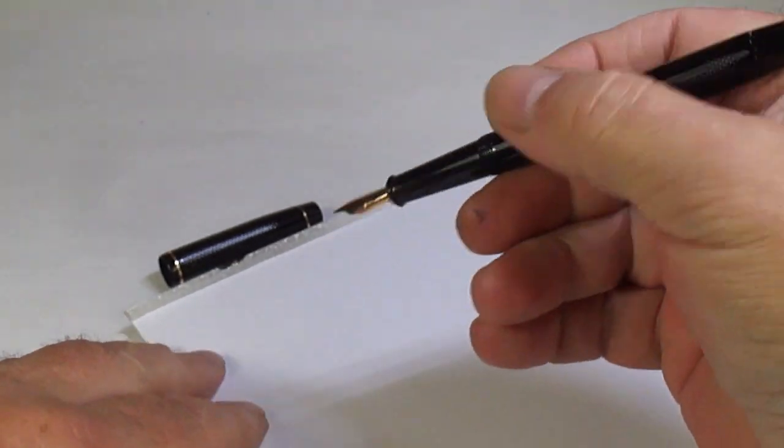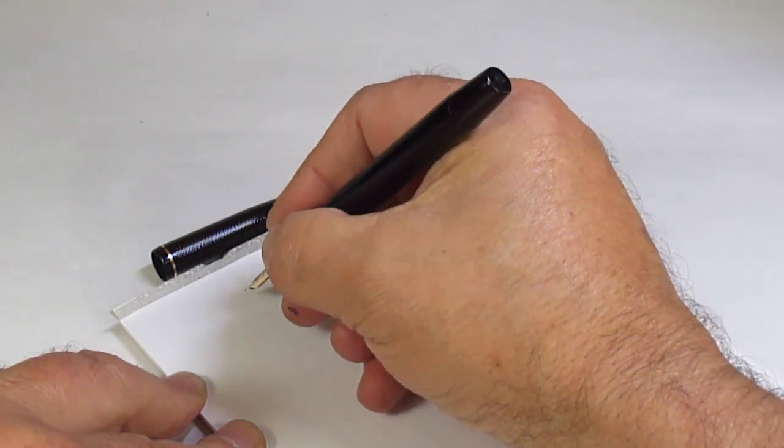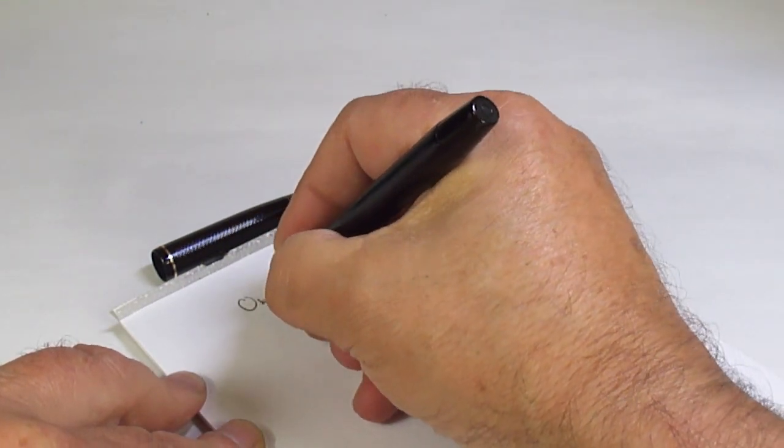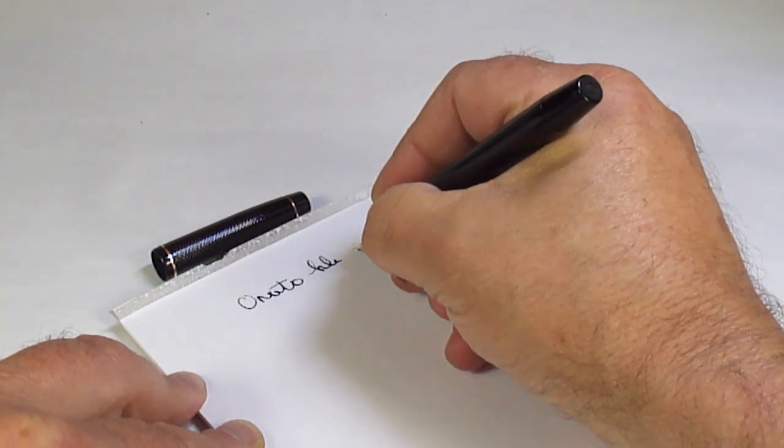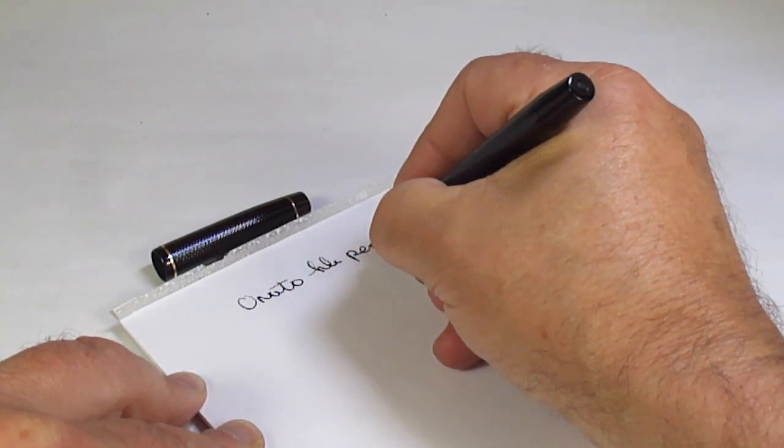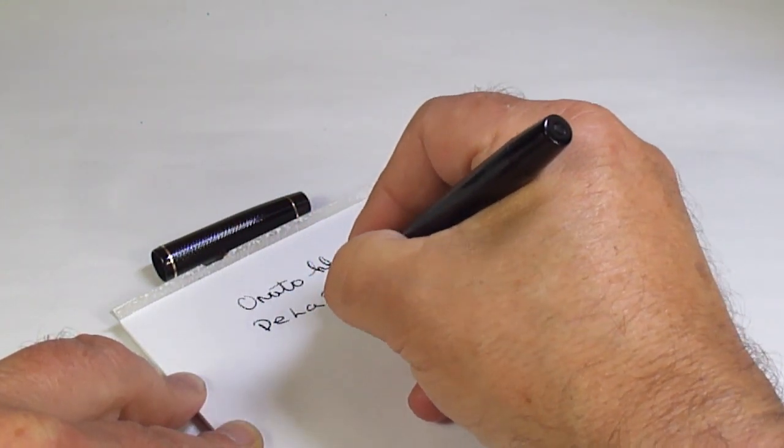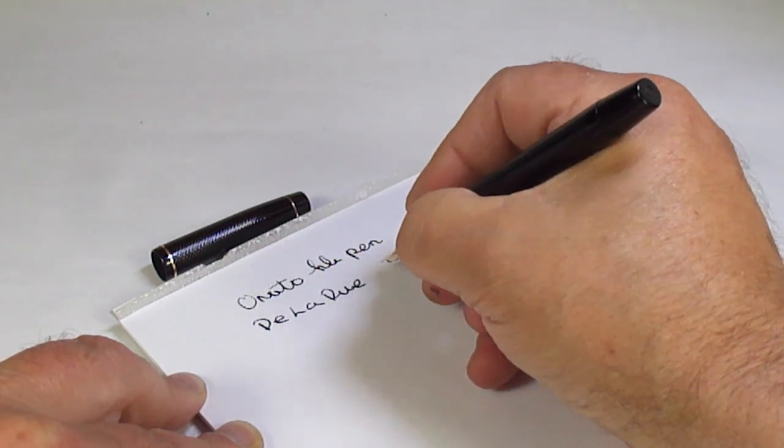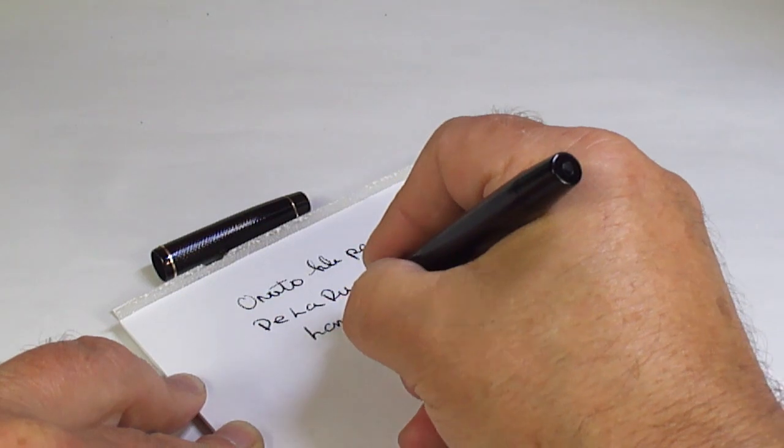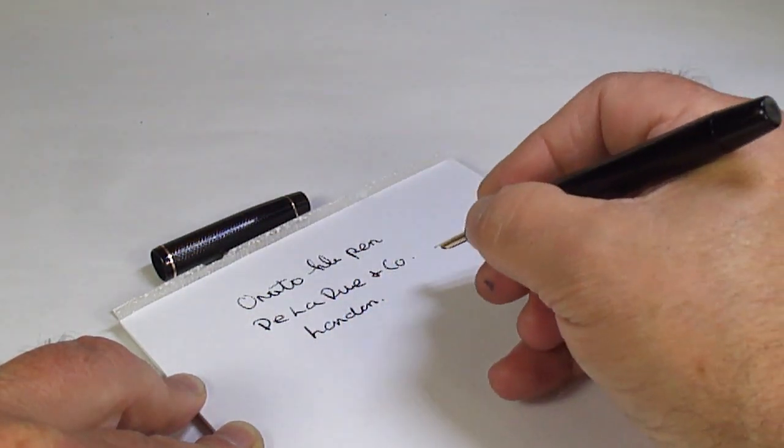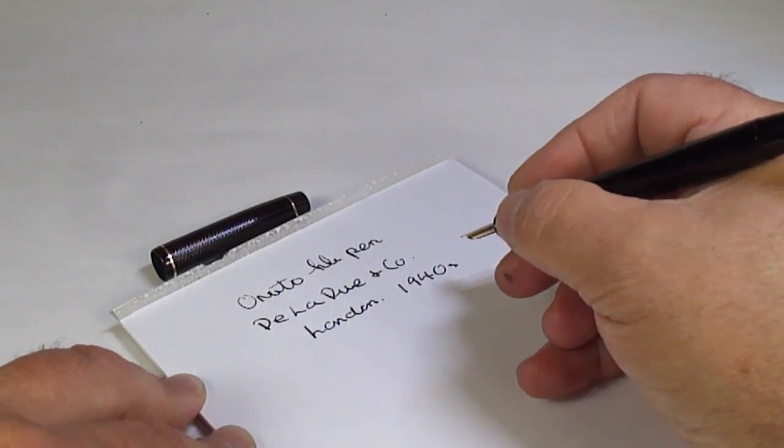Let's bring on some paper and let's see how the pen writes. So what we've got is an Onoto, Onoto the pen, made by De La Rue and Company of London. As we said, we're dating it to the 1940s.